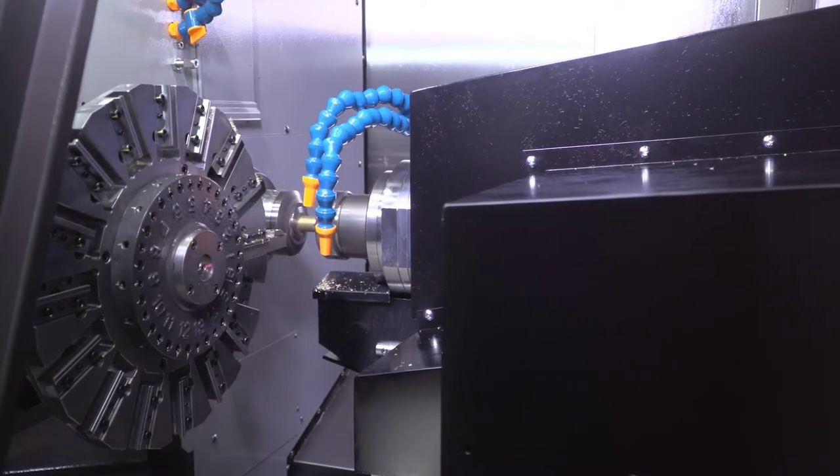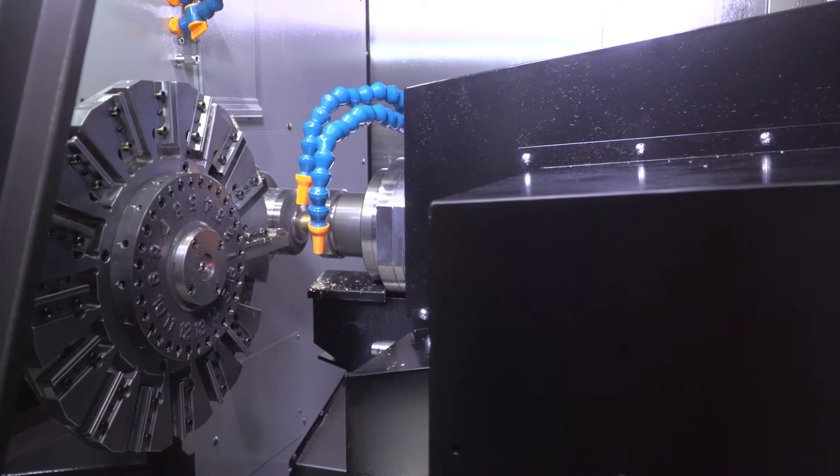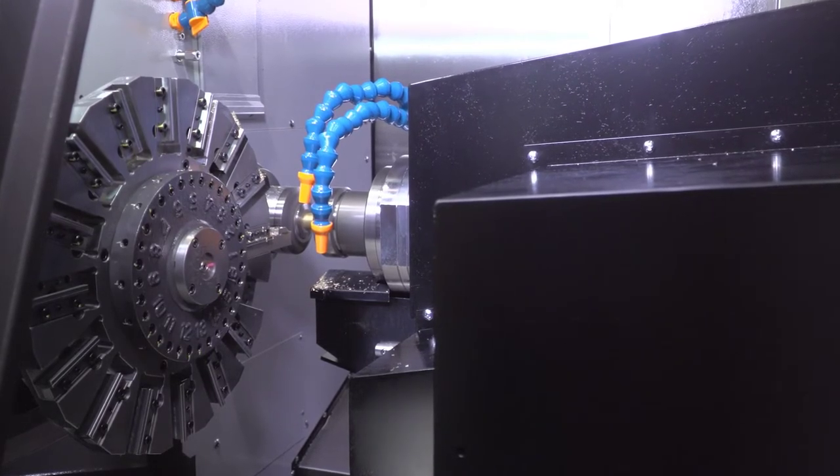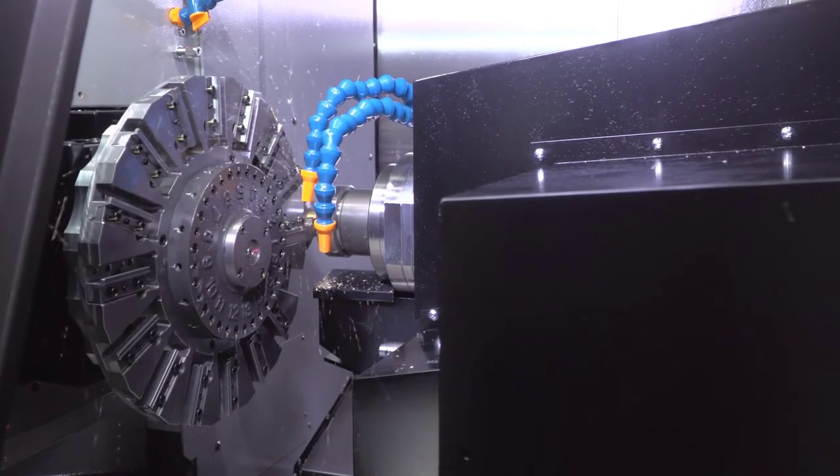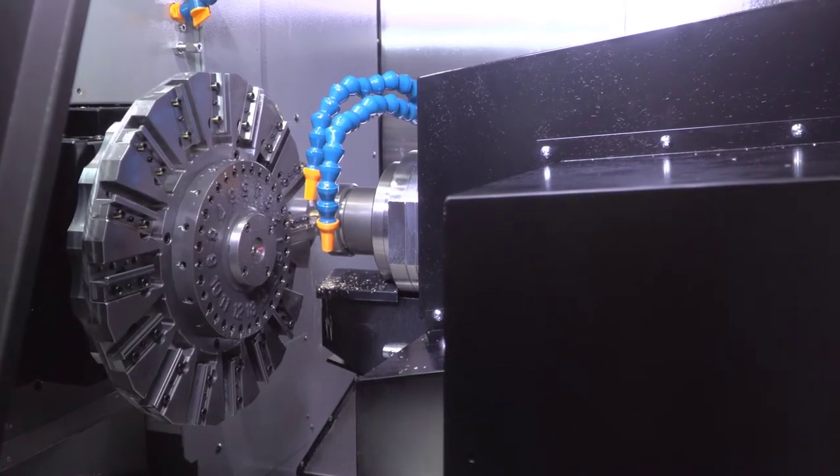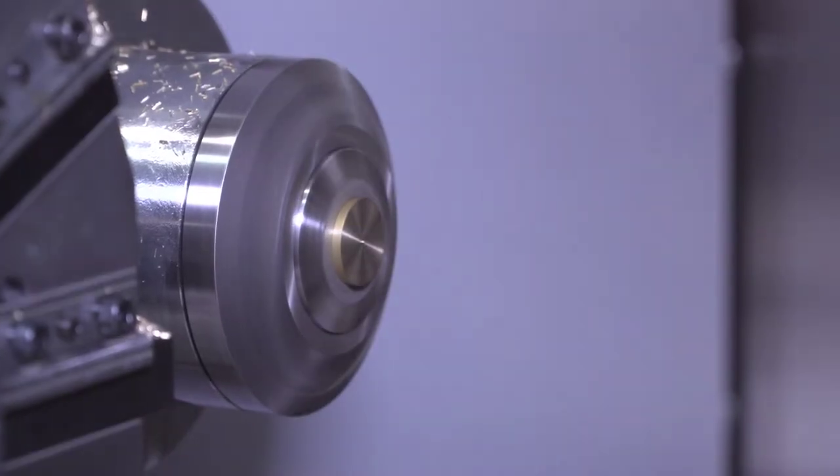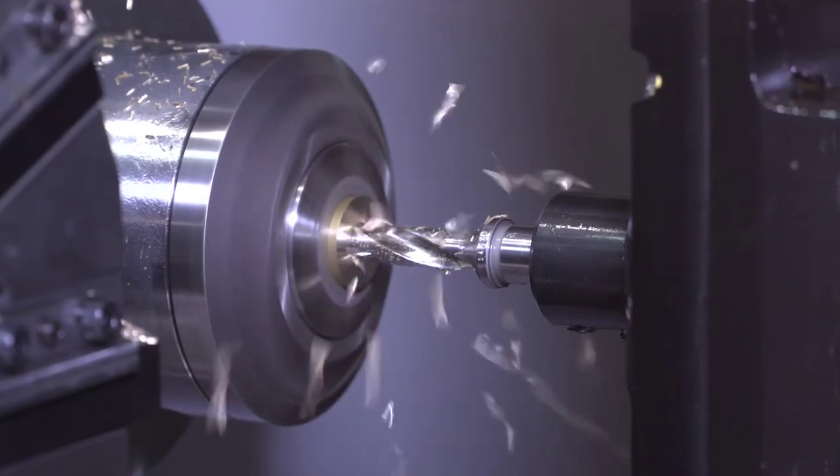This machine is equipped with a 16 station turret that can address main spindle or sub spindle. The TMU-1R is equipped with a B-axis milling spindle that can also be used for turning.